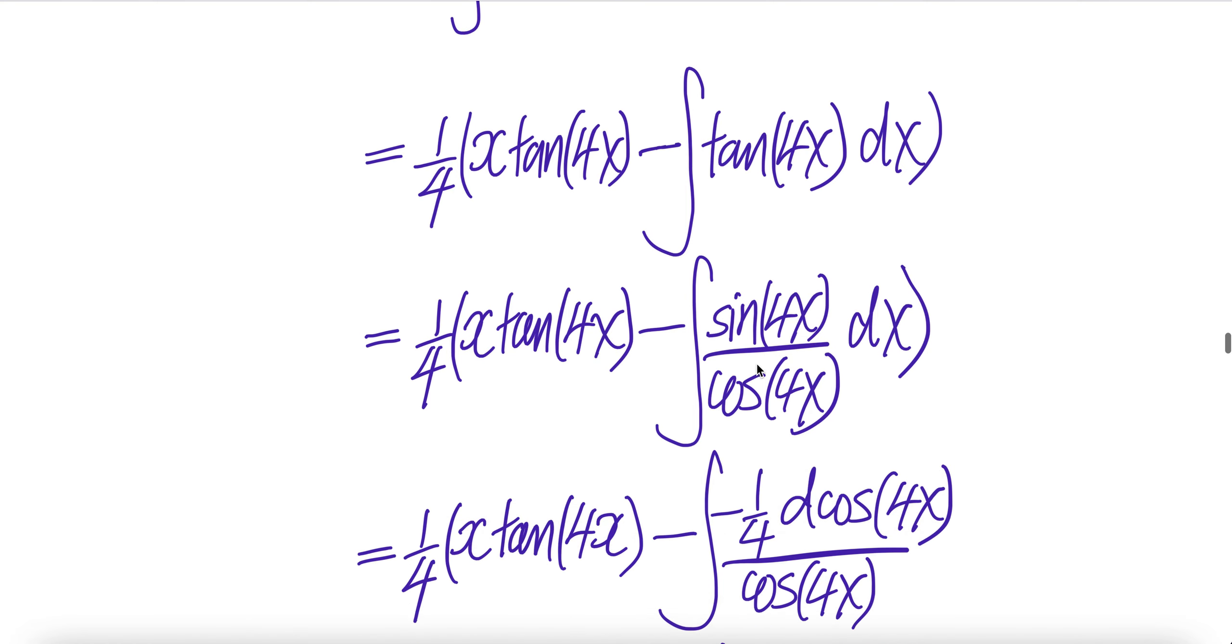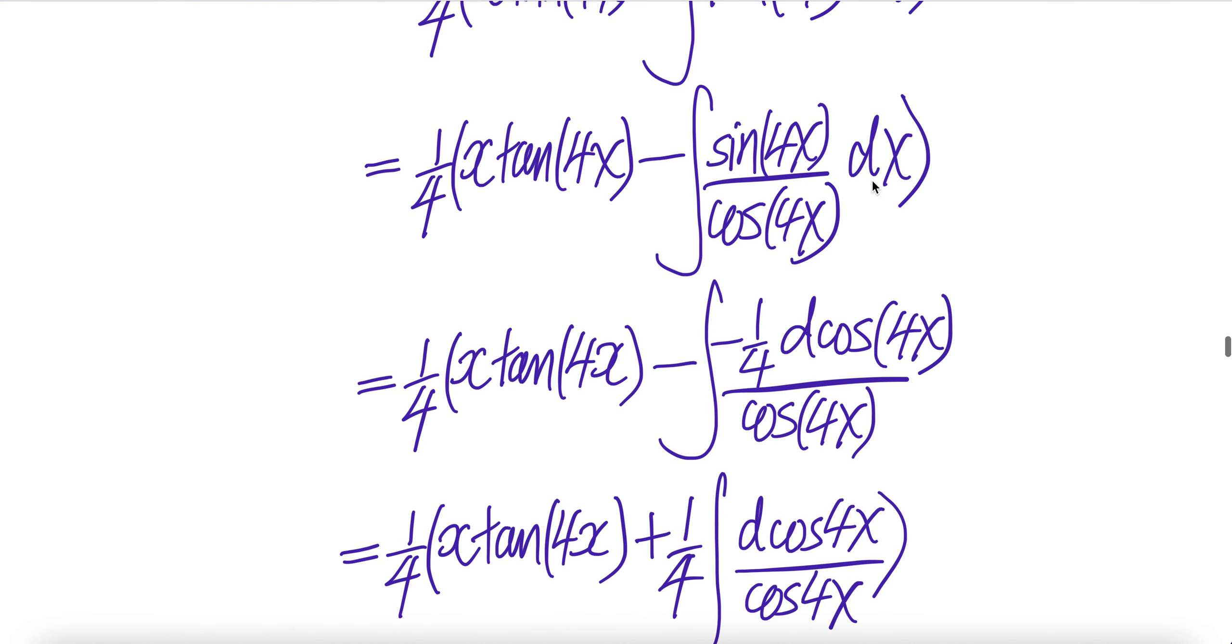Write this as sine 4x over cosine 4x. Push this into the derivative of x. The derivative of cos is negative sine 4x dx times the derivative of 4x, which is 4. There's no 4 here, so you divide by 4. So this whole thing is the same thing as that.